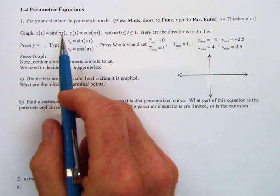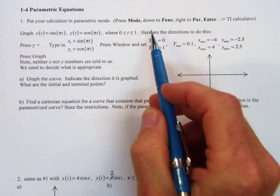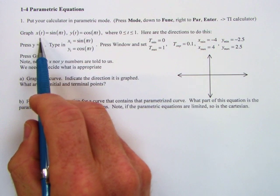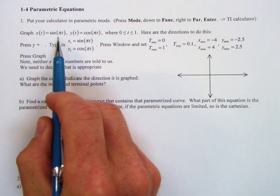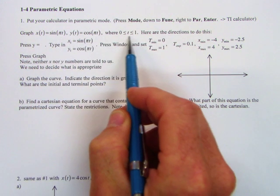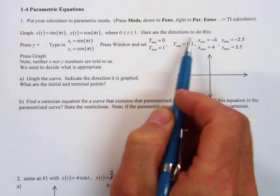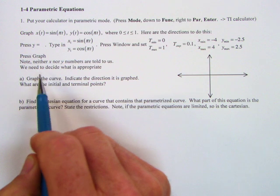Parametric equations. Put your calculator in parametric mode. Press mode down to function. I'll go and do all this. What we're going to do is graph x(t) = sin(πt), y(t) = cos(πt), where t is bounded between 0 and 1 inclusive, and here are the directions to do this. So it's going to tell you everything.